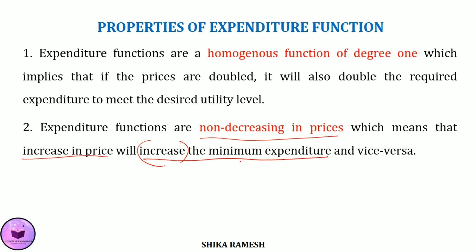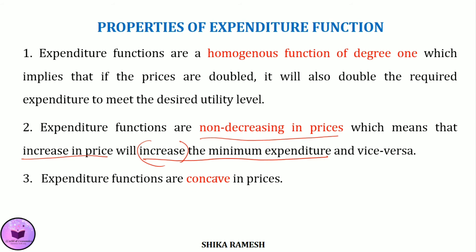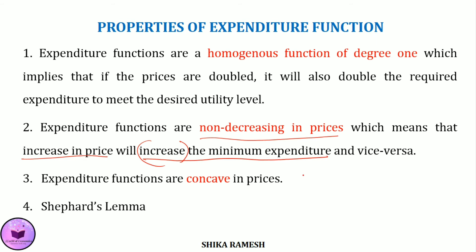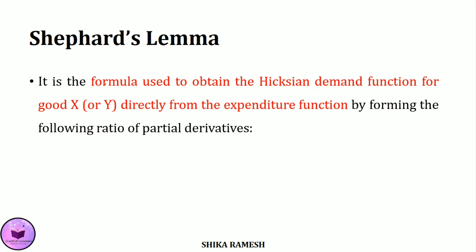The third property is that expenditure functions are concave in prices. The last and one of the most important properties is Shephard's Lemma, which is a formula used to obtain the Hicksian demand function for good X or Y directly from the expenditure function.